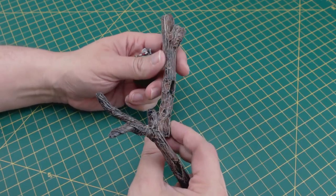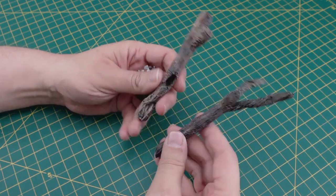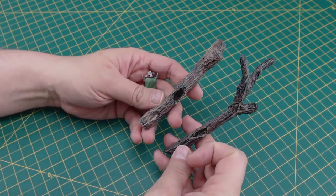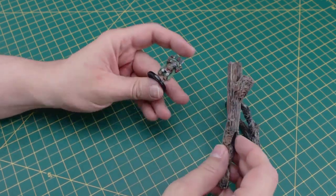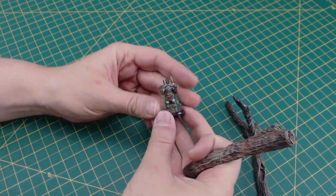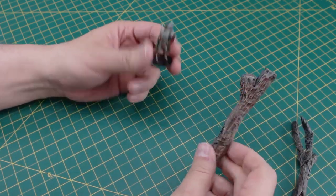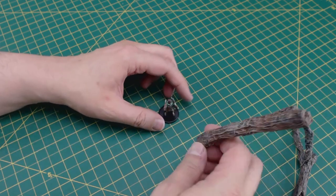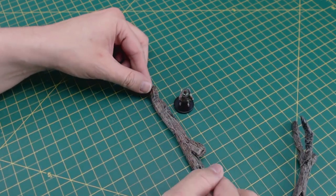You may recall in scatter terrain video 13 dealing with small logs that we used aluminum foil to create fallen logs for use with a standard 28 millimeter miniature. I have a miniature here to show you the size comparison between our six-foot-tall Ranger and our small log scatter terrain. These logs would be roughly one and a half meters or five feet wide in comparison to our miniature.